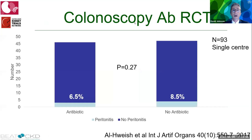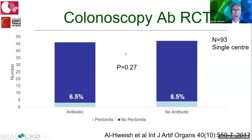Observational non-randomized cohort studies show that peritonitis primarily occurs in patients not receiving antibiotic prophylaxis. For colonoscopy, the overall peritonitis rate is approximately 6%, and this mainly affects those without prophylaxis. One single RCT from Saudi Arabia did not show a statistically significant result due to small numbers, but numerically there was less peritonitis in those receiving antibiotics.